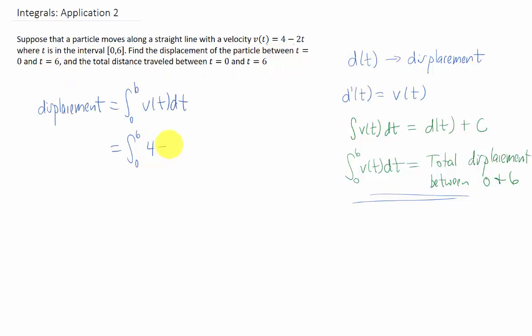We can plug our velocity function into this formula, and then we can integrate with respect to time. The integral of 4 is 4t. The integral of negative 2t is negative t squared, and we're going to evaluate that between 0 and 6. That means we plug in the upper limit of integration and subtract what we get when we plug in the lower limit of integration. I'm getting 24 minus 36, or negative 12 is my answer.